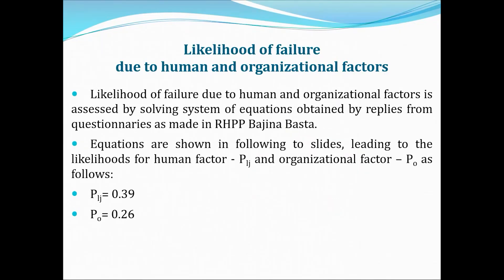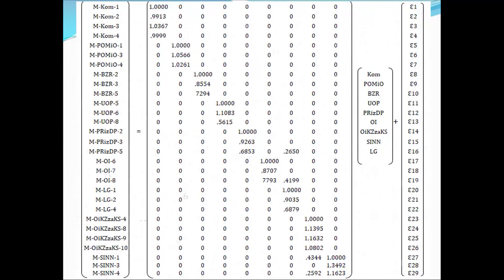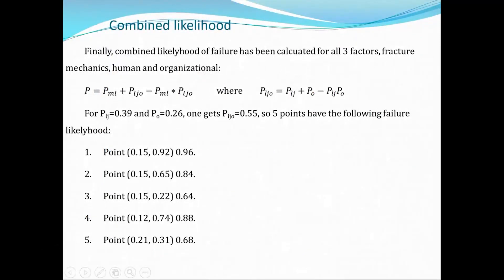I will briefly go through this. There are two sets of equations which should be solved. There are some unknown quantities — the likelihoods for human factor and organizational factor — and input values are those obtained from questionnaires filled in and replied to by people employed at the same company, where these pressure vessels are located, that is the reversible hydropower plant by Natasch. The results of the solution of this awkward but still linear system of equations are 0.39 for human factor and 0.26 for organizational factor, and if we combine them, it is 0.55.